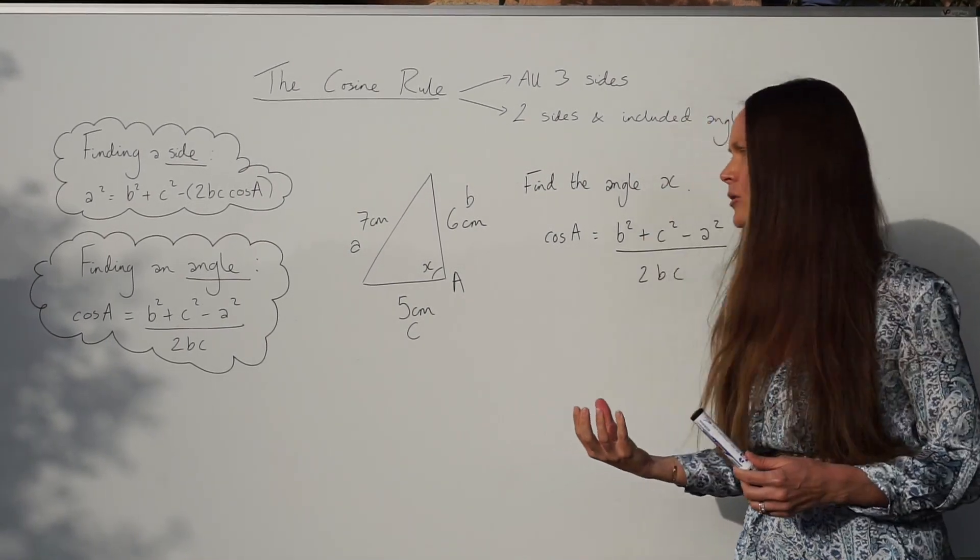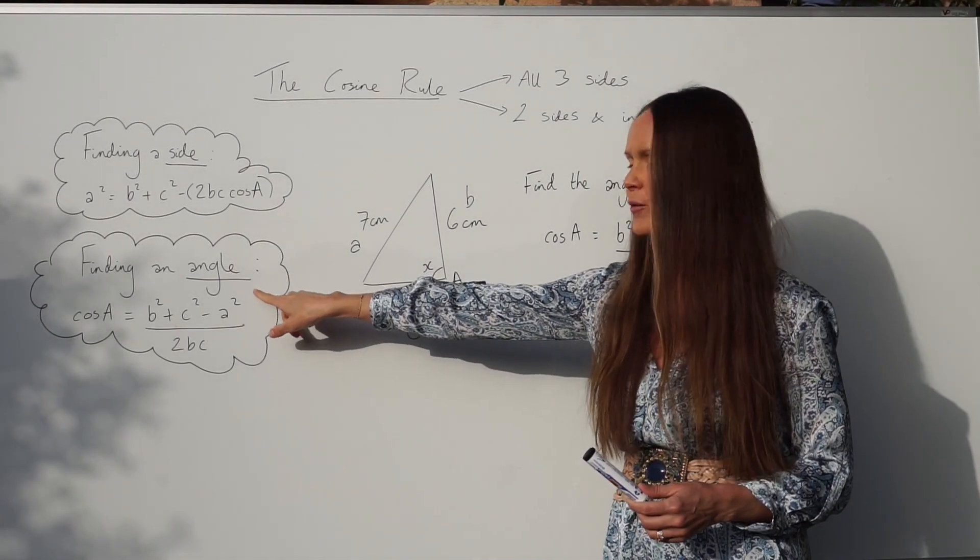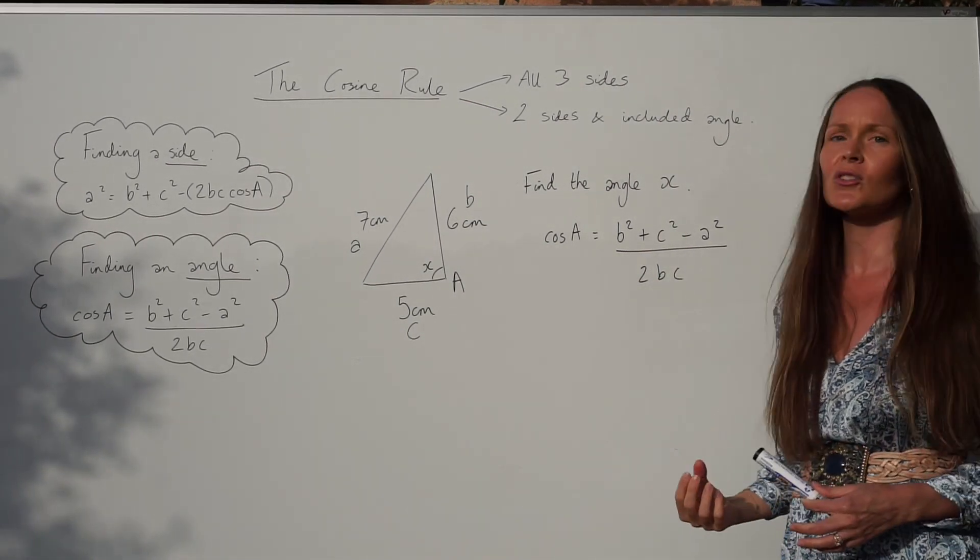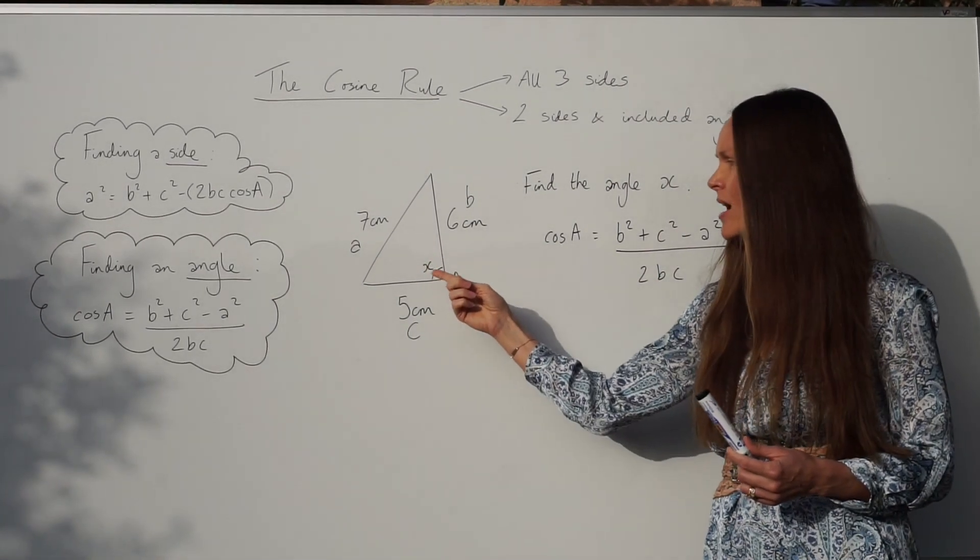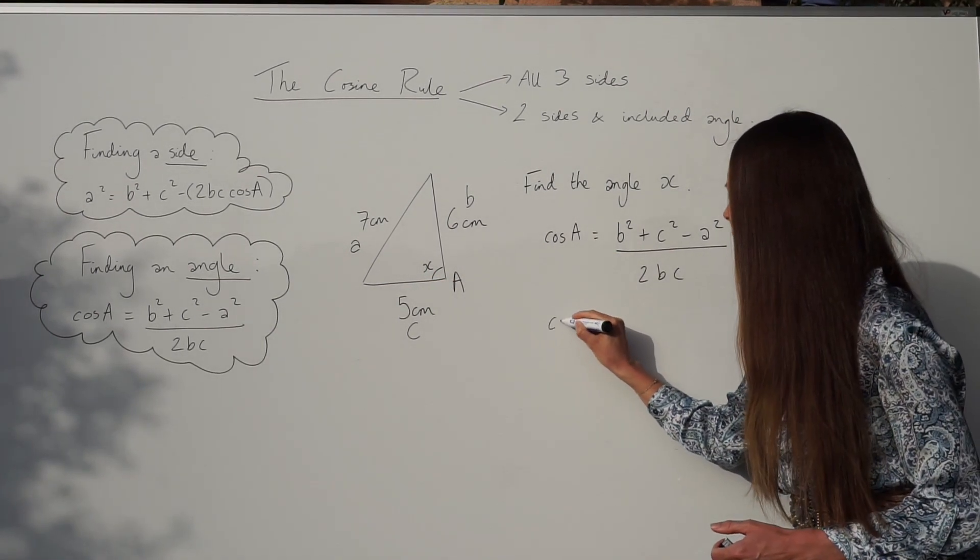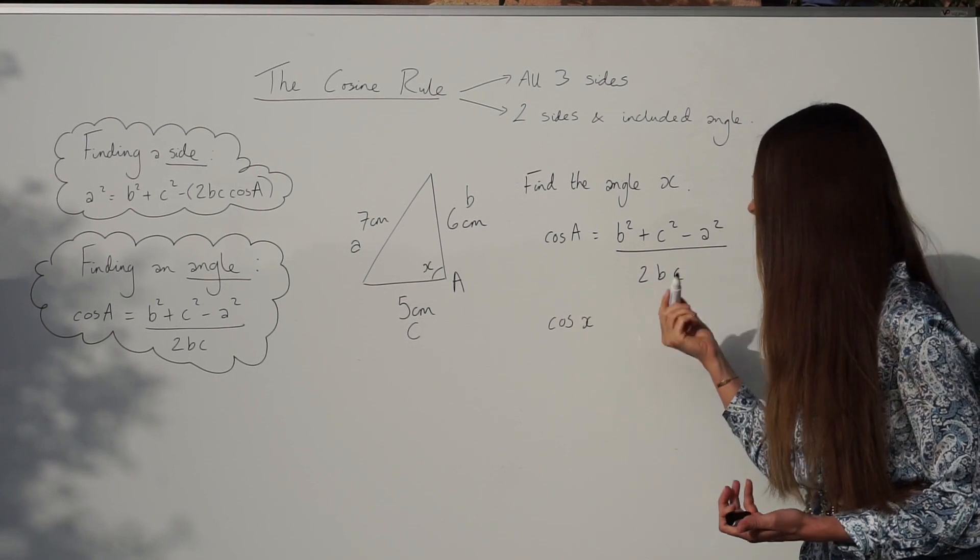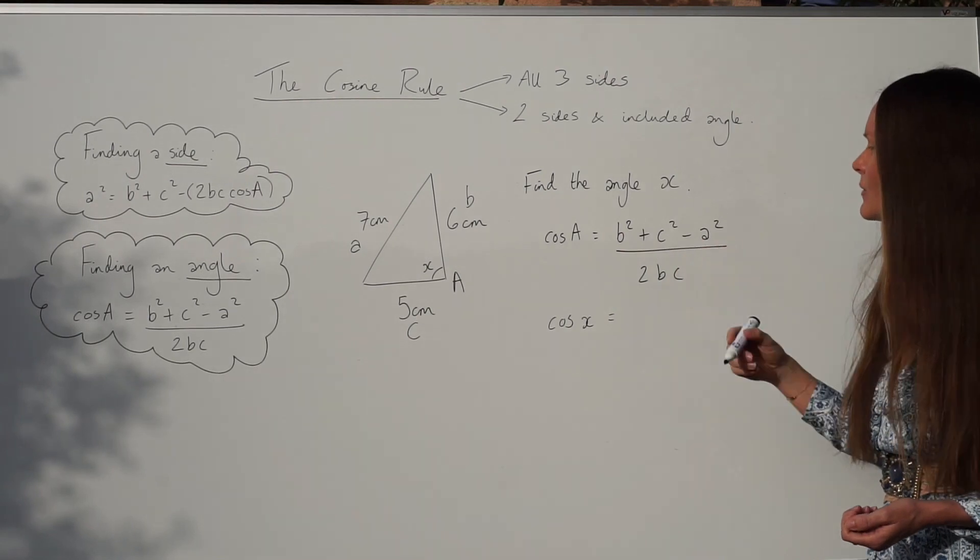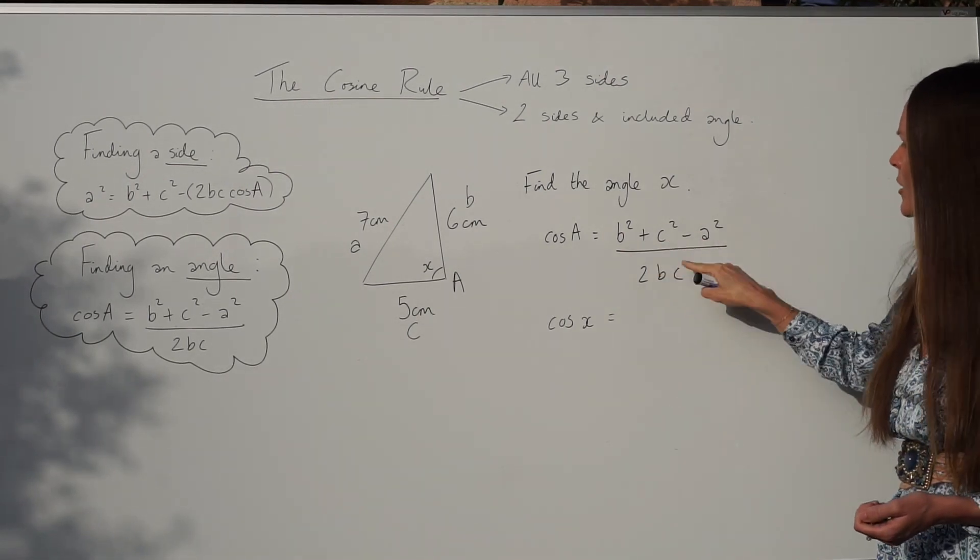So because we're finding an angle, we need to use this version of the formula, okay, which I've written down here. And then you're just substituting in the information from here into the formula. Okay, so instead of writing cos capital A, you could write cos X, okay, because this is angle X. But it doesn't matter if you leave it as A.